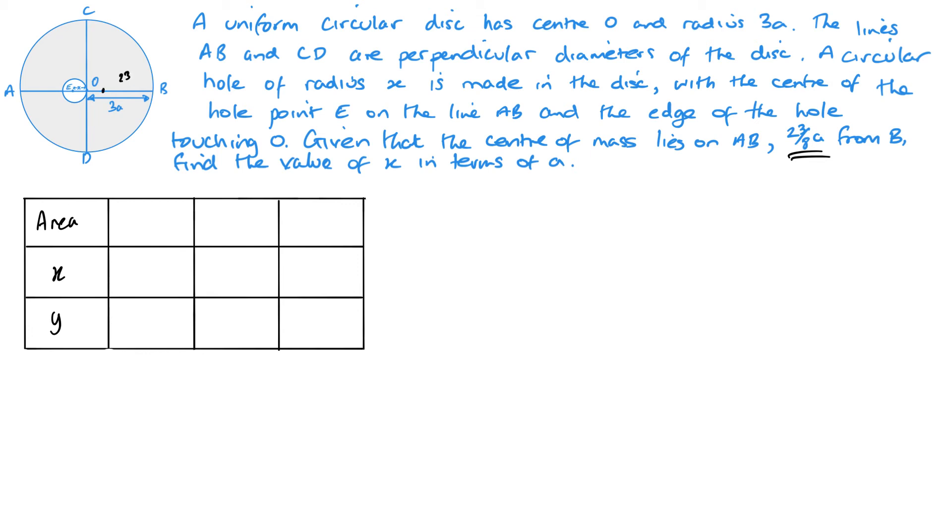23 over 8A. So if I do 3A minus that, as it's a radius there, then that will give me 1 eighth A. Because I'm going to do everything from the origin. Looking at this large area, pi R squared.